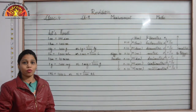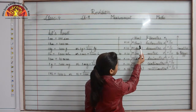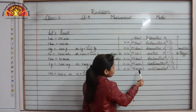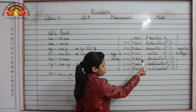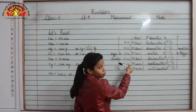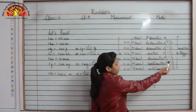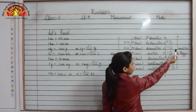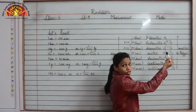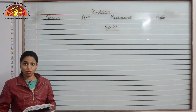Now let us look at the following table for various units of measuring length. Here you can see kilometer, hectometer, decameter, meter, decimeter, centimeter, and millimeter. When you have to move from a bigger to a smaller unit, you multiply by 10 as many times till you reach the value. Similarly, when moving from smaller to bigger unit, you multiply by 1 upon 10 as many times till you reach the unit.